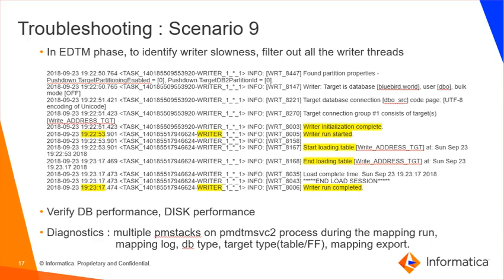In the EDTM phase, to identify writer slowness, filter out all writer threads and look for the pattern of messages shown. When a delay is noticed between the writer run started and completed messages, first confirm whether the upstream transformations have finished properly. If so, then suspect the writer transformation. If the writer is found to be slow and the target is relational, verify if the DB is able to write quickly — a DBA can help here. If DB performance is ruled out, collect the diagnostics mentioned.